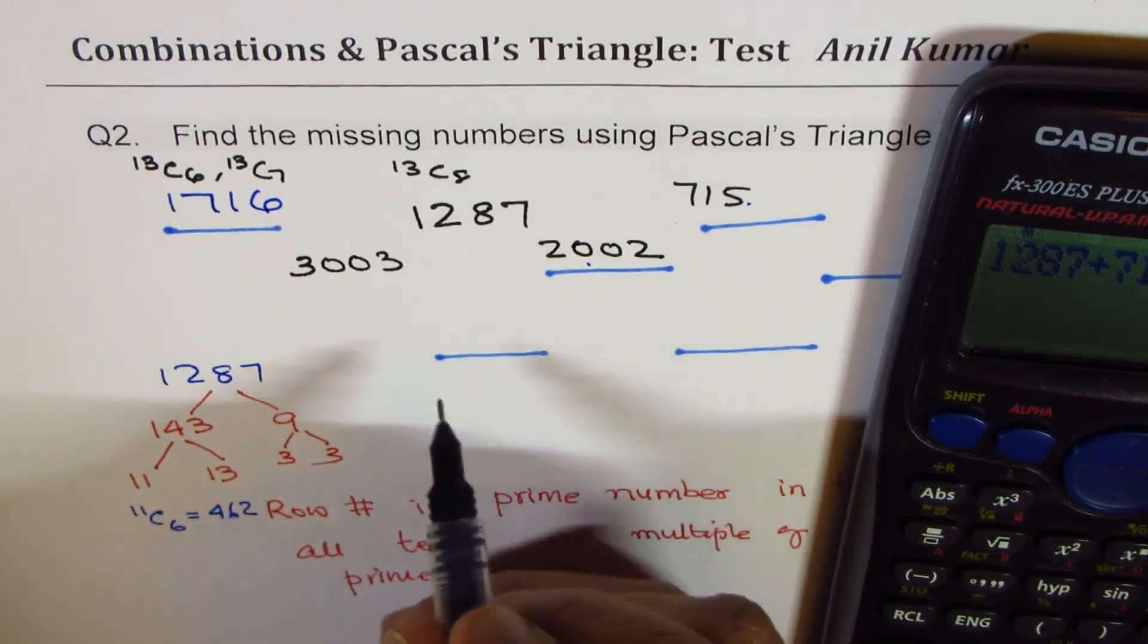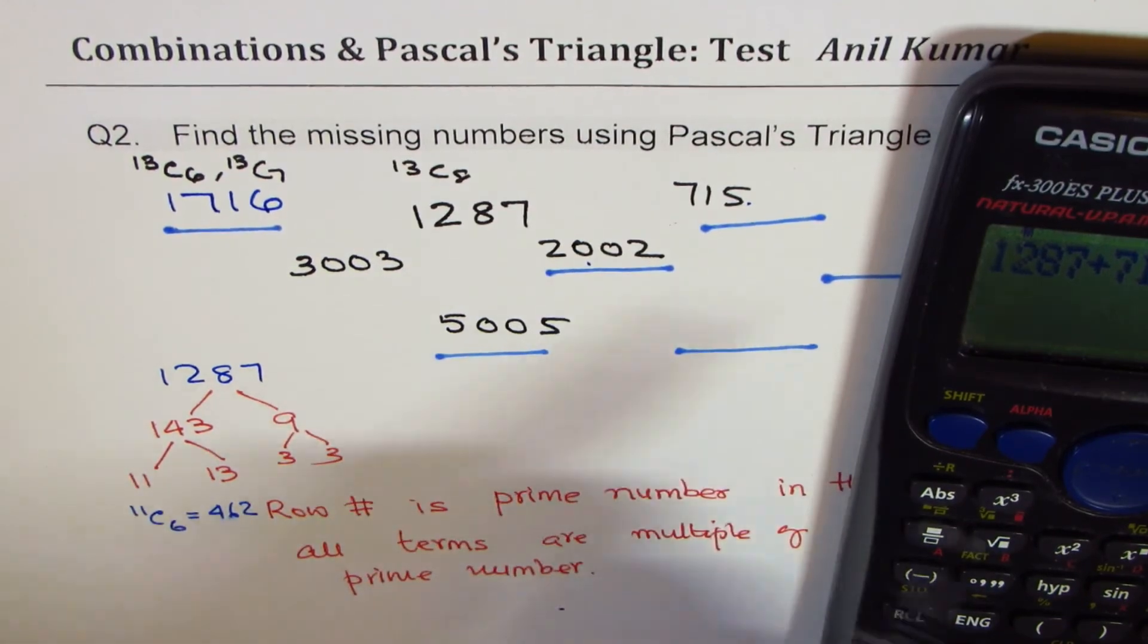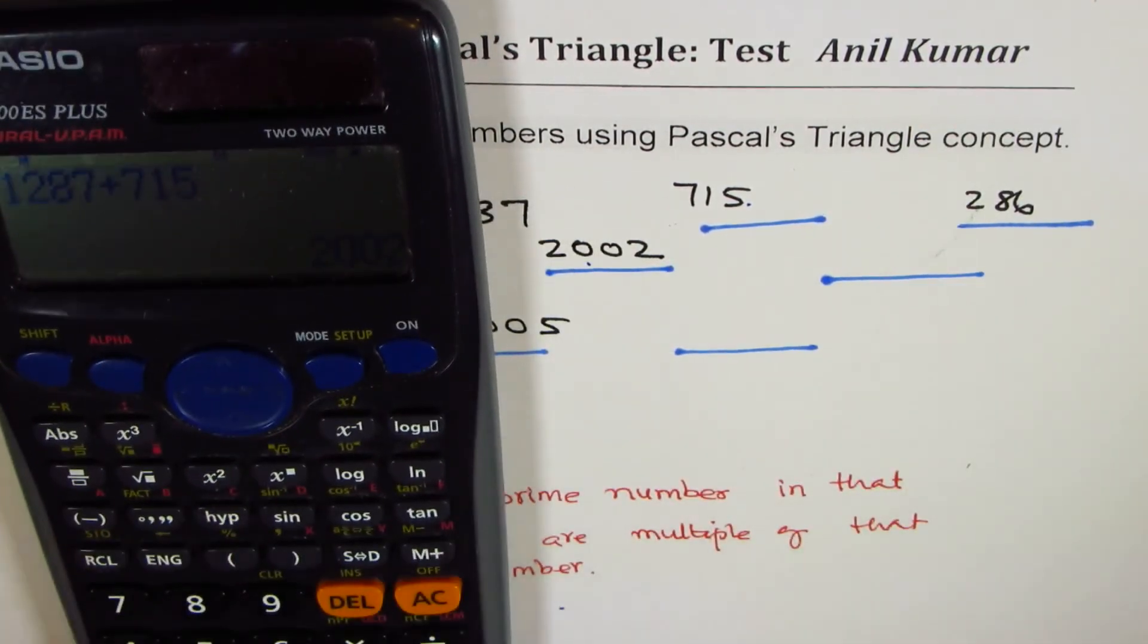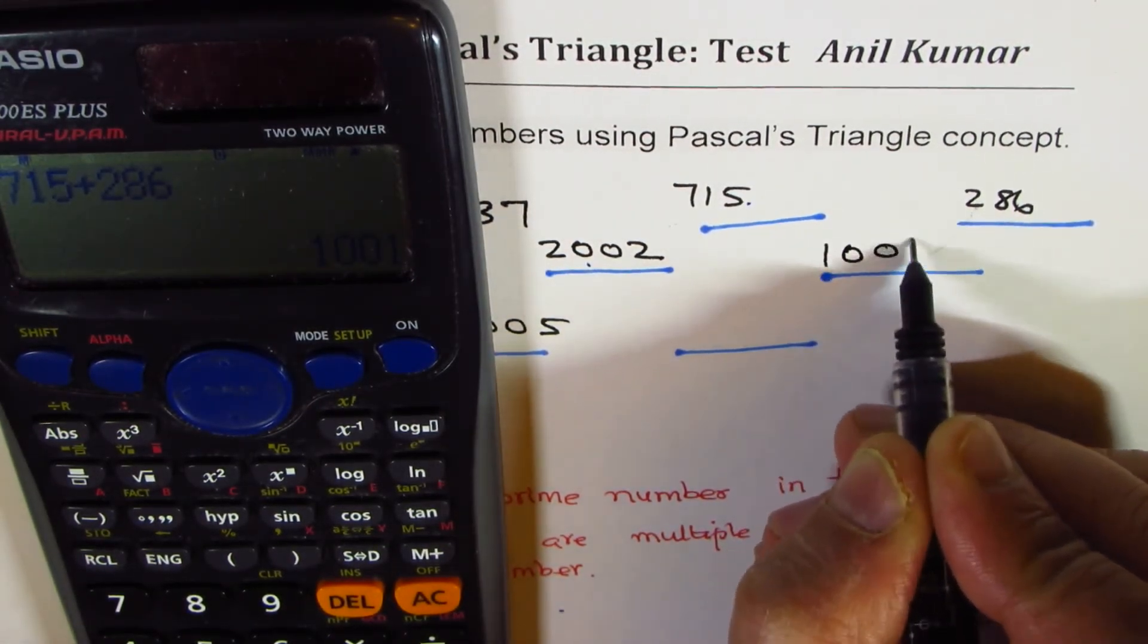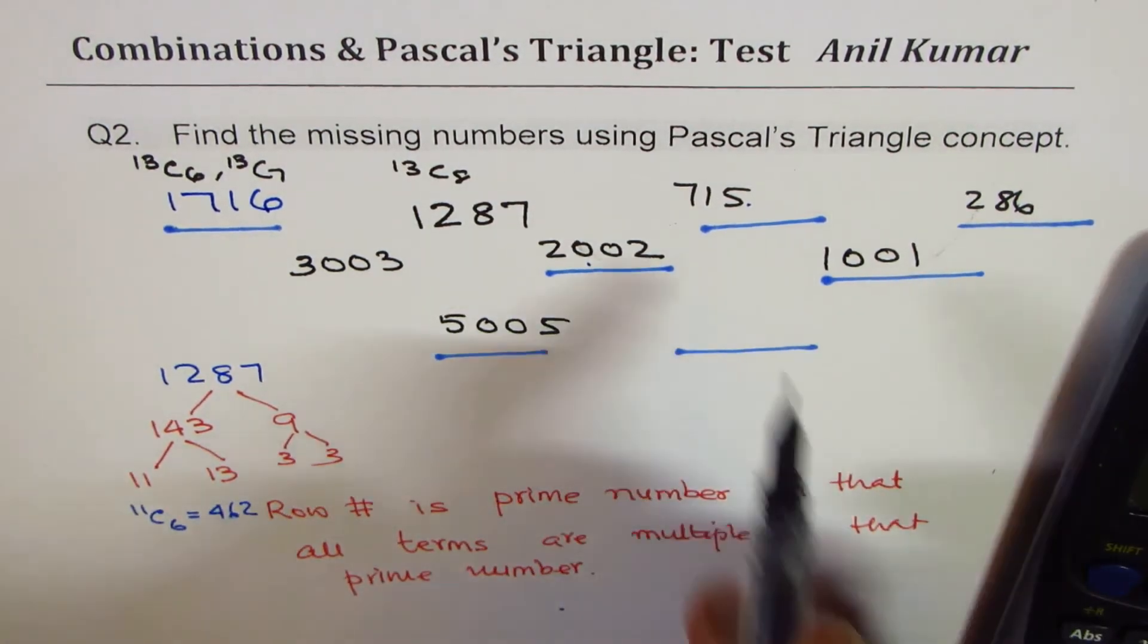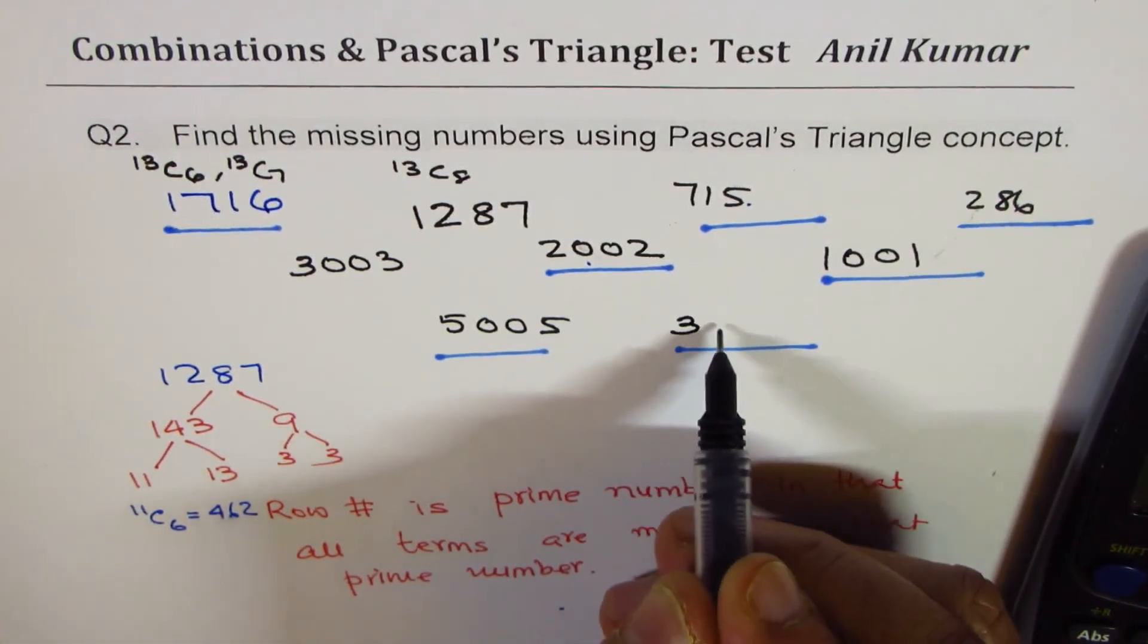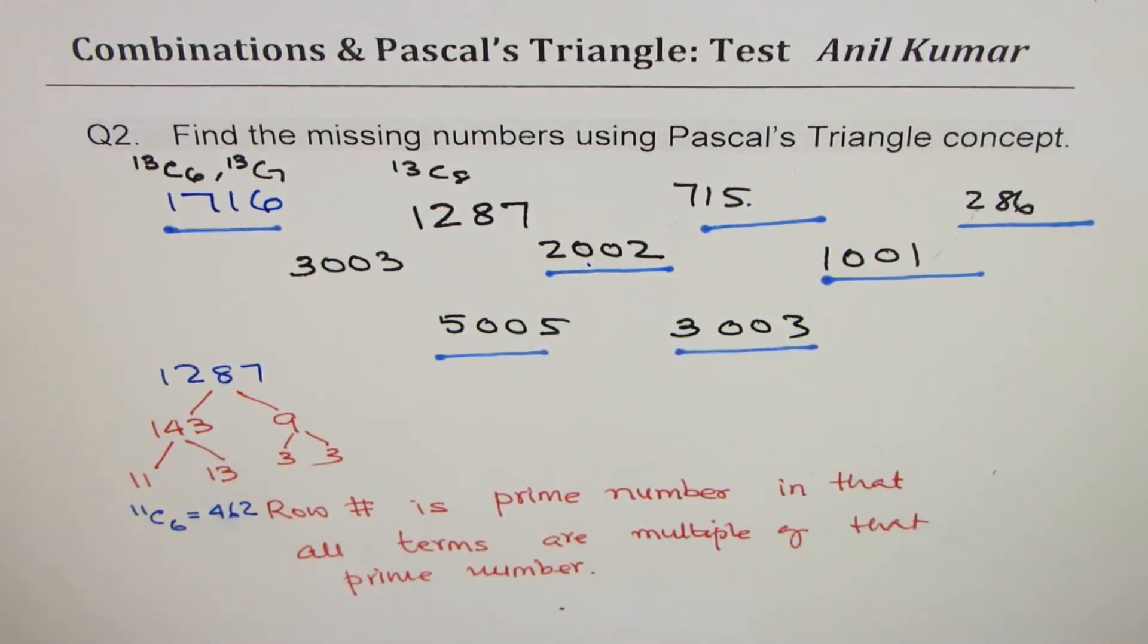So we can add this. So we get 5005. And let's move forward. We have 715 plus 286 equals to 1001. That is a very interesting series. And when you add this up, you get 3003. And that is how you can fill this up.